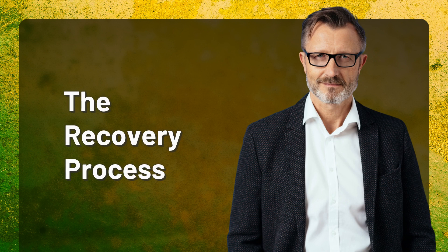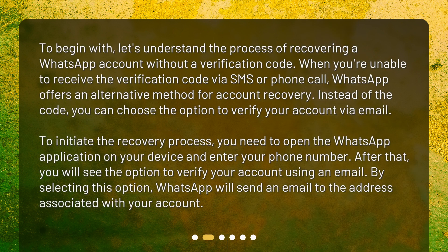The Recovery Process. To begin with, let's understand the process of recovering a WhatsApp account without a verification code. When you're unable to receive the verification code via SMS or phone call, WhatsApp offers an alternative method for account recovery. Instead of the code, you can choose the option to verify your account via email. To initiate the recovery process, you need to open the WhatsApp application on your device and enter your phone number. After that, you will see the option to verify your account using an email. By selecting this option, WhatsApp will send an email to the address associated with your account.